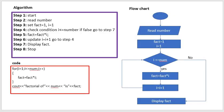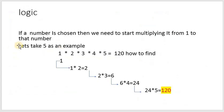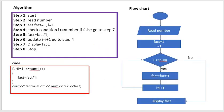Now we go with the algorithm. First you start, then you read a number. In step 3 you set fact equal to 1 and i equal to 1. Why i equal to 1? Because when you take factorial of 5, you start from 1 to 5 — so i starts at 1 for iteration purposes. Step 4: check the condition i less than or equal to number. Suppose it is 5, then 1 less than or equal to 5 is true, so you go to step 5.